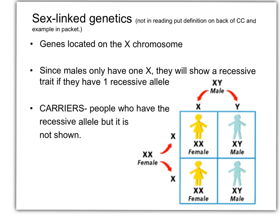Turn to the sex-linked part of your genetics packet. The textbook does not talk about sex-linked genetics, but you're responsible for knowing about it when we take the test. There are three things you need to know about sex-linked genetics on this PowerPoint slide, so make sure you write them down either on the back of your comprehension constructor or in the example part of your packet. When we're talking about sex-linked genetics, we're talking about traits found on the X and Y chromosomes that determine your sex or gender.